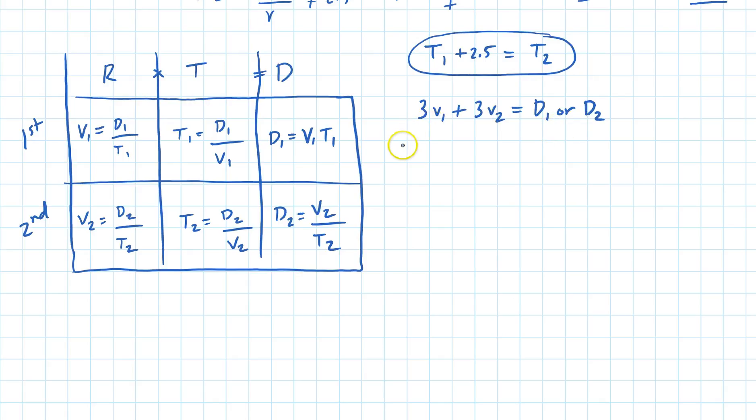First I use 3 times V1 plus 3 times V2 equals D1. And then what I did, I said D1 is equal to V1 T1.